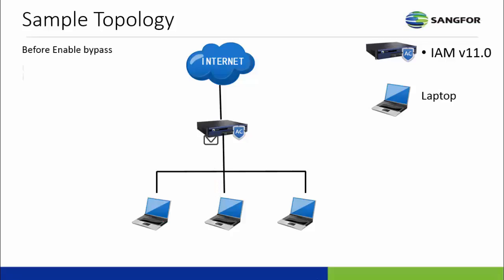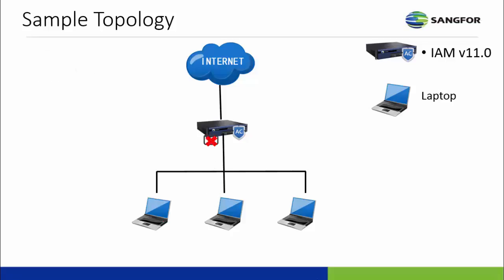This is the sample topology. Before IAM enables bypass mode, the user cannot send email because it has been blocked by the IAM policy. But after enabling bypass mode, the user is able to send email.